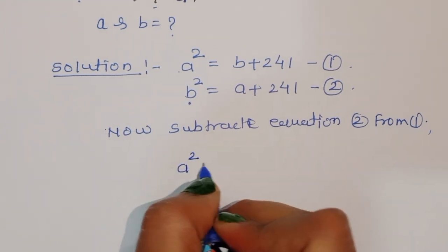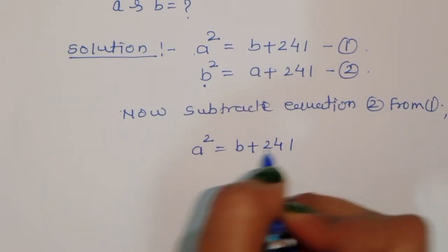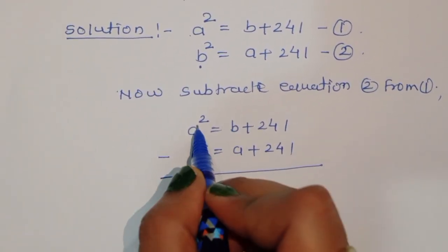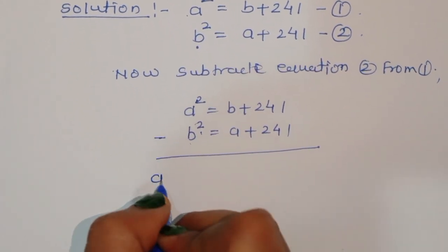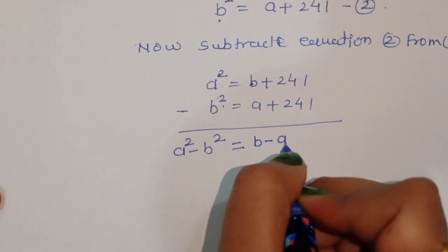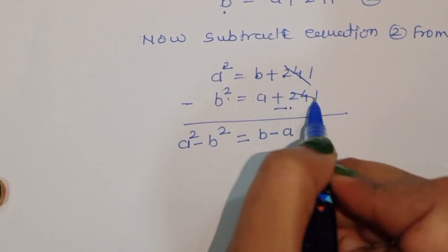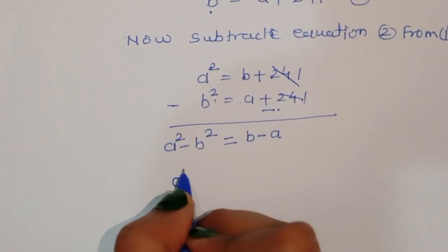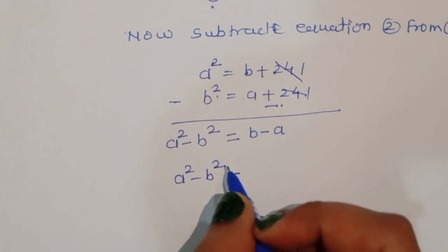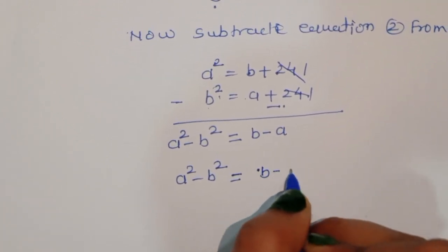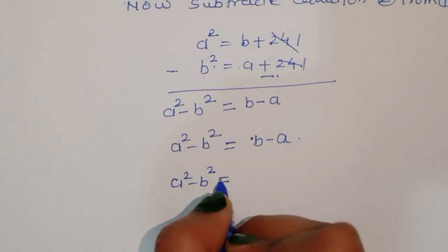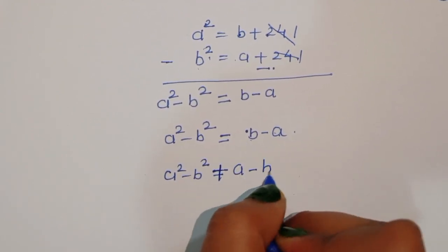Subtracting equation 2 from equation 1, we get: A squared minus B squared equals B minus A. And 241 minus 241 equals 0. So we get A squared minus B squared is equal to A minus B.